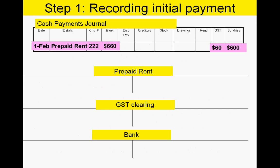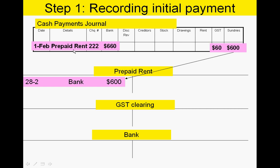A key point: when you prepay an item you must acknowledge it as 'prepaid' — prepaid rent, prepaid insurance, etc. There are three numbers: put the full amount of the cheque in the bank column for bank reconciliation purposes, then split out the GST and the prepayment amount. In unit three you'll never have a prepaid column, so you'll always record prepaid expenses in the sundry section, which is for infrequently occurring transactions.